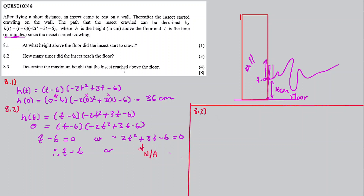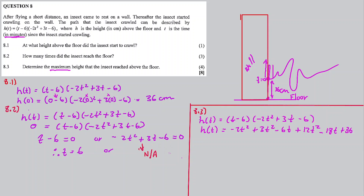8.3: Determine the maximum height that the insect reached above the ground. To find the maximum height, we set the first derivative h prime of t equal to zero, which gives us the time at which the maximum height occurs.